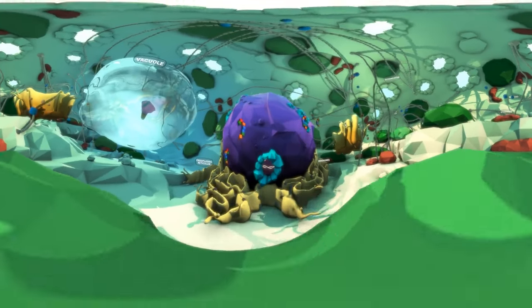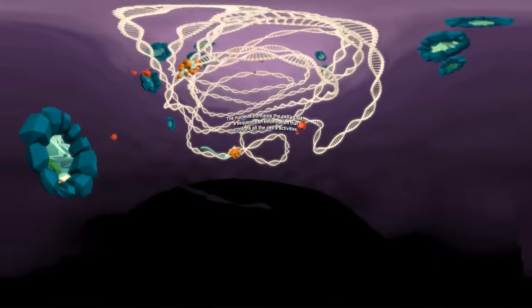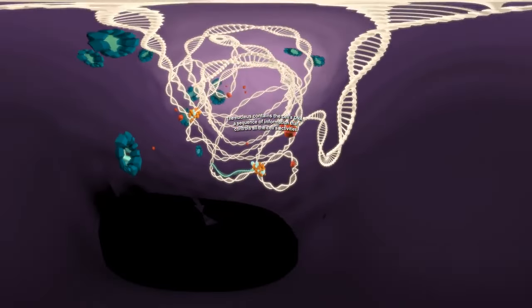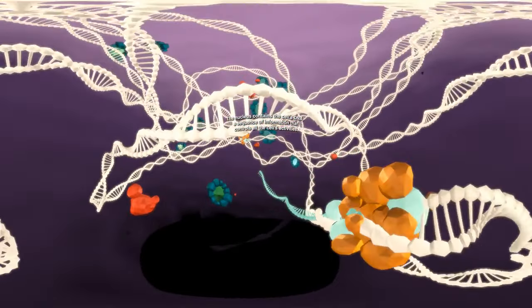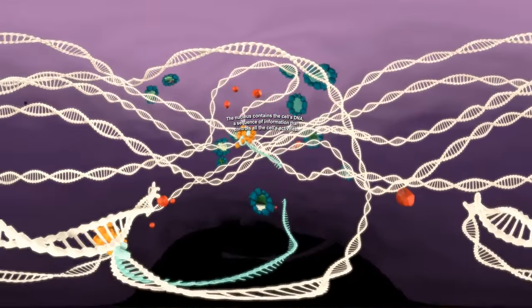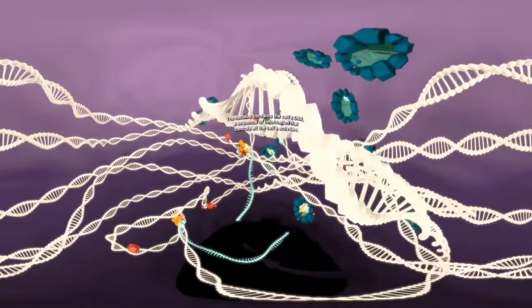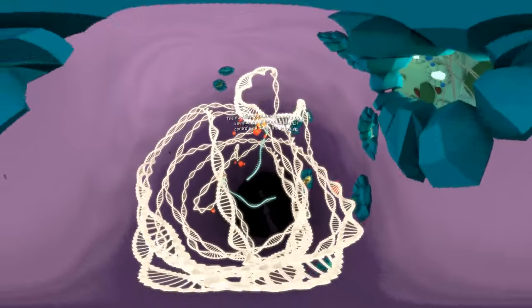You are heading through a nuclear pore and into the plant cell nucleus. The nucleus is home to the cell's DNA, a long, string-like molecule. The DNA contains a sequence of information that controls all of the cell's activities.